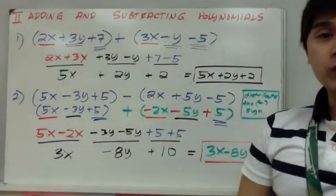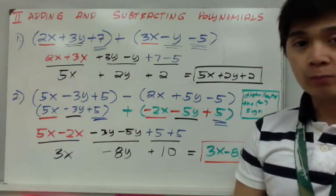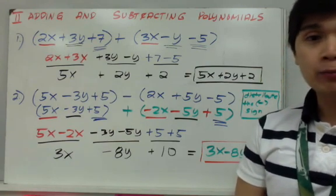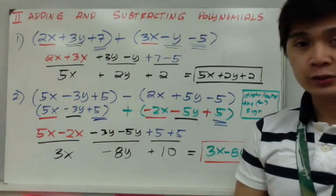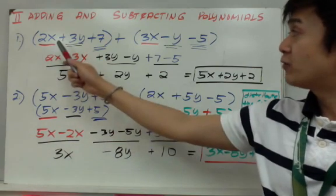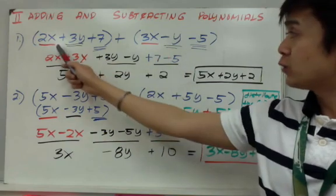Let's use addition and subtraction in simplifying polynomials. For the first example, we're going to add polynomials. Adding polynomials is similar to combining like terms. You have two groups of polynomials: the first one is 2x + 3y + 7.